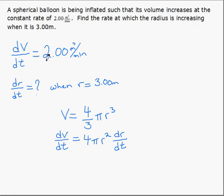So now we substitute in the given information that will allow us to find dr/dt, which is what we're looking for. So 2.00 equals 4 pi, and r at the instant we're looking for is 3. That leaves dr/dt.